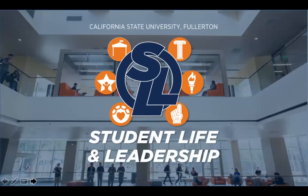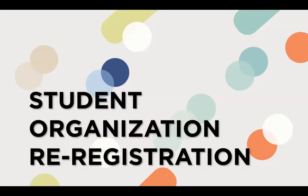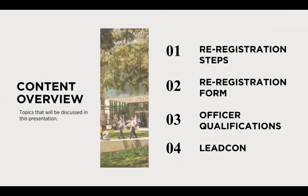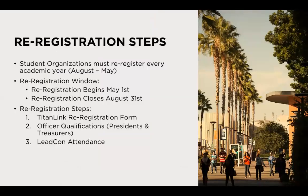As part of the California State University system, student organizations at all CSU campuses must re-register every academic year. Today we'll cover the three-step registration process at Cal State Fullerton. Student organizations have from May 1st to August 31st to complete the three-step process to register their existing student organization in order to receive the privileges of being a recognized group on campus.